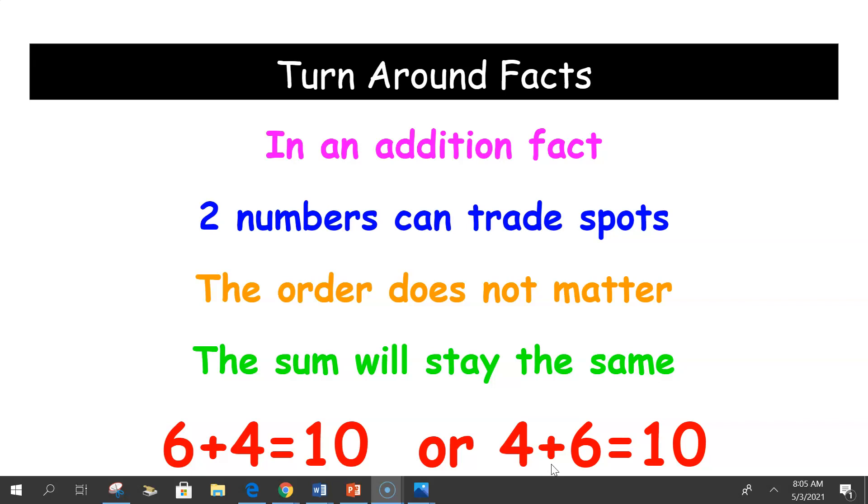Great! I hope you were able to come up with a couple of turnaround facts. Like here we have 6+4=10 or 4+6=10. So another one could be 3+7=10 or 7+3=10. Remember they flip-flop, they change places.